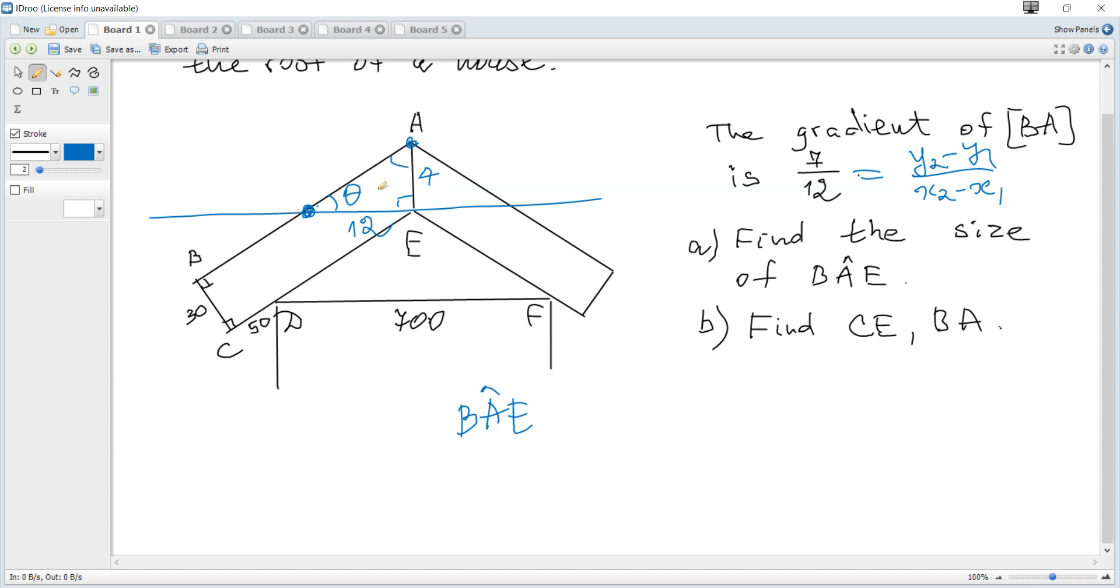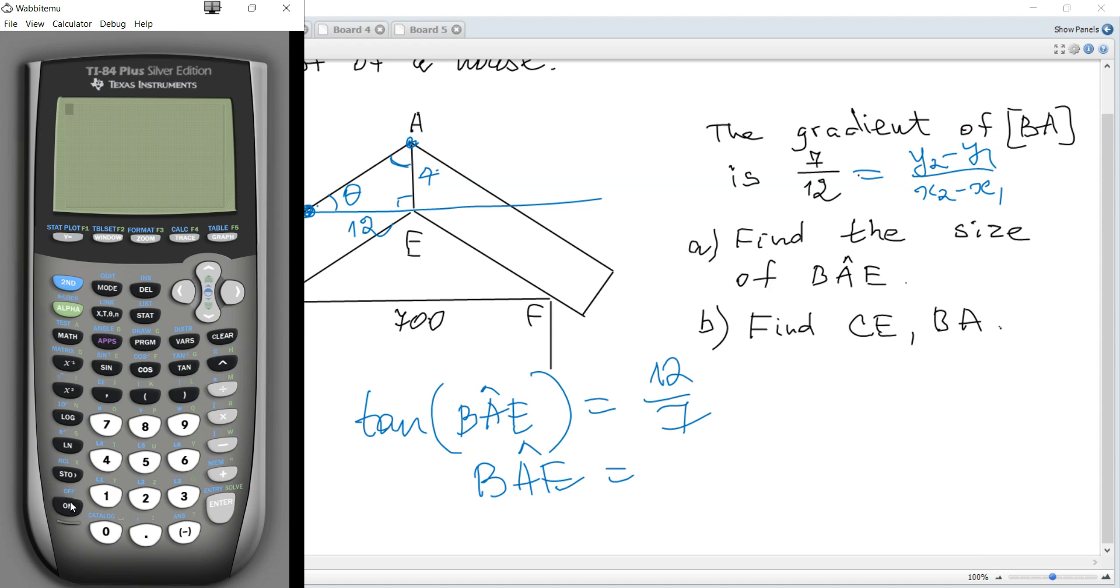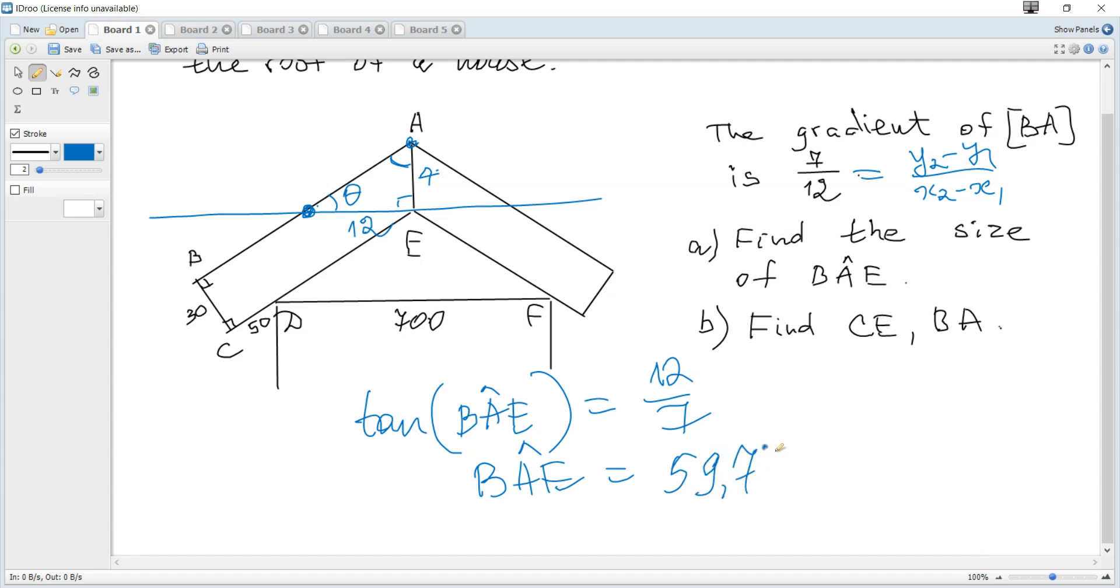You can see that for BAE, tangent of BAE is 12 over 7. Hence BAE is just inverse tangent, or arctangent, of 12 over 7, and it's 59.7 degrees to 3 significant figures.